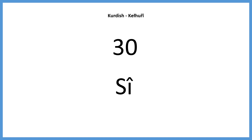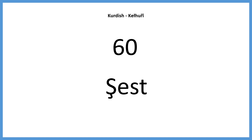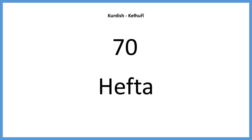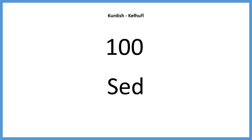So now we will count up in tens. 40: cil. 50: penjah. 60: shest. 70: heftar. 80: heshtar. 90: newed. 100: sed.